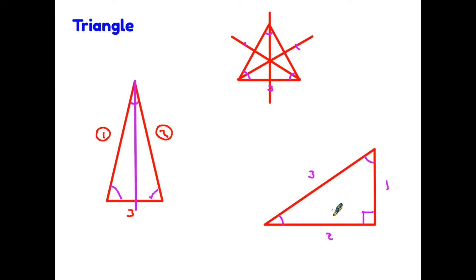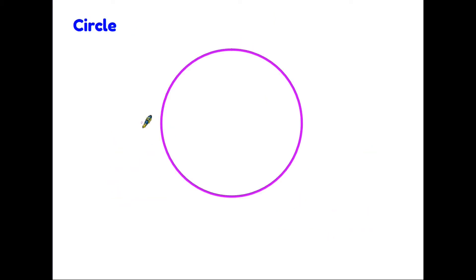And the final shape we need to know something about is the circle. A little bit unusual, all the other shapes we've talked about here have straight sides. This one has only one side and it curves all around the edge. A circle has many, many lines of symmetry because if you draw any line through the center of the circle, that is a line of symmetry.